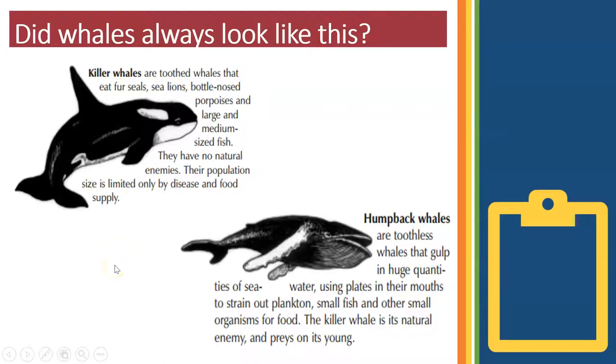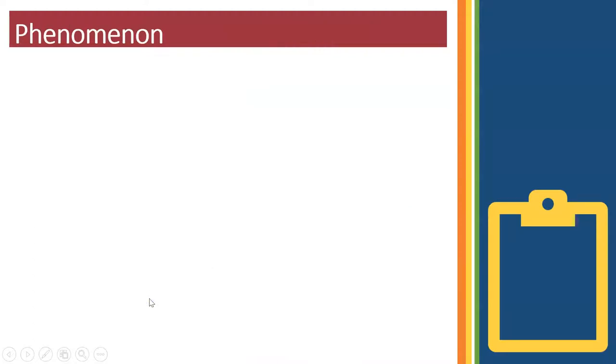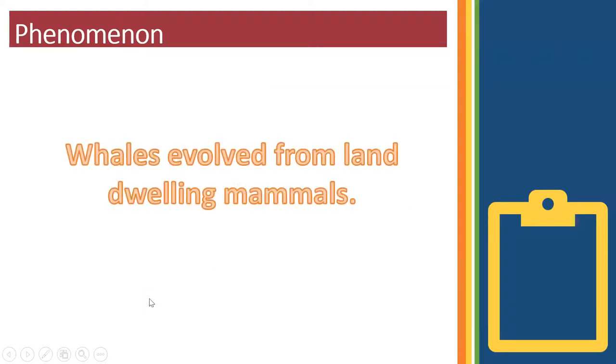But whales didn't always look like they do today. In fact, evidence implies that the ancestral whale looked much different from these modern-day counterparts. Really different. Really, really different. Paleontologists claim this. They claim that whales evolved from land-dwelling mammals. That's a bold claim, right?